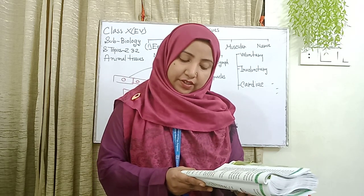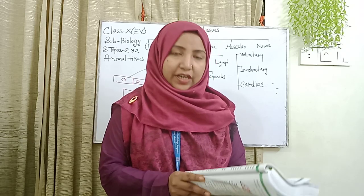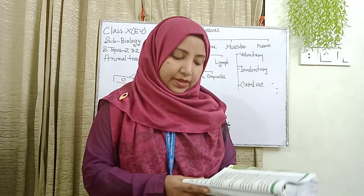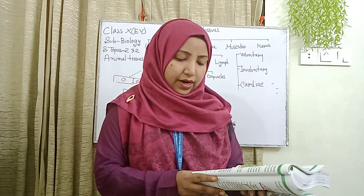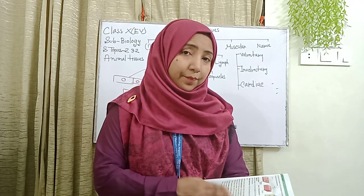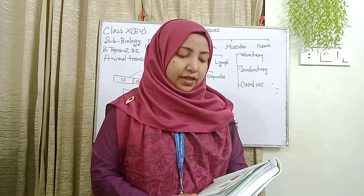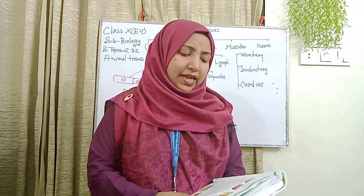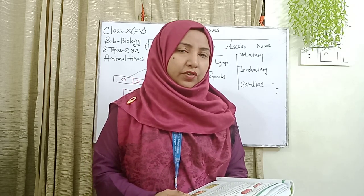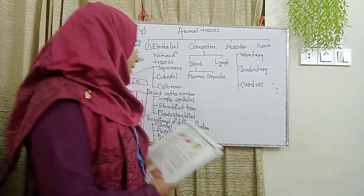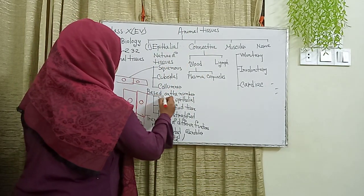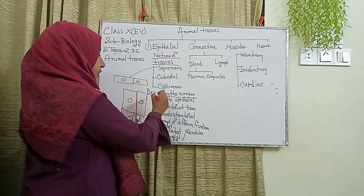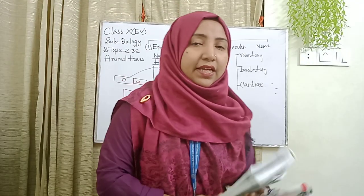Cuboidal epithelial tissue is found mainly in the kidney and is mainly active in transportation and covering. The third type, columnar epithelial tissue, has cells that are narrow and elongated like a column. It is found in the internal wall of the intestine of vertebrates and is mainly active in secretion, protection, and absorption. Based on the number of layers, epithelial tissues are also classified into further types.